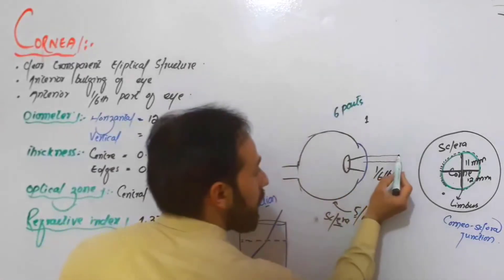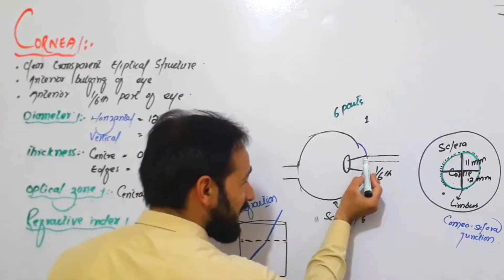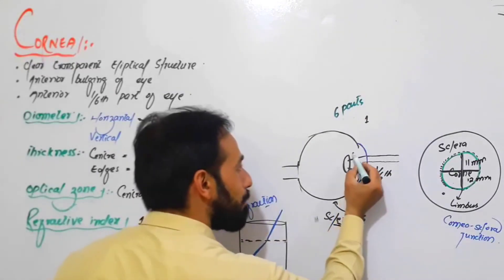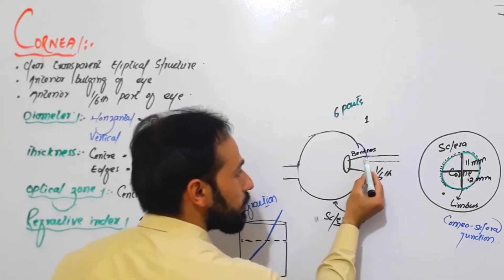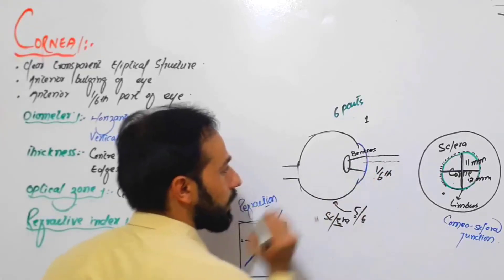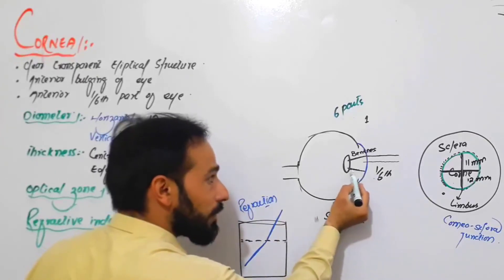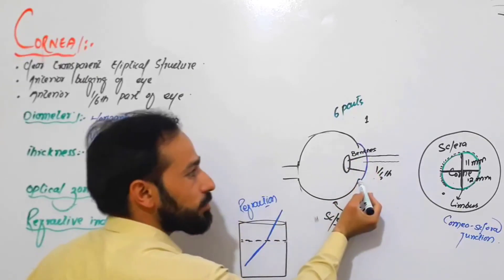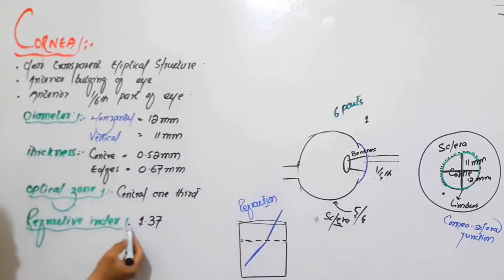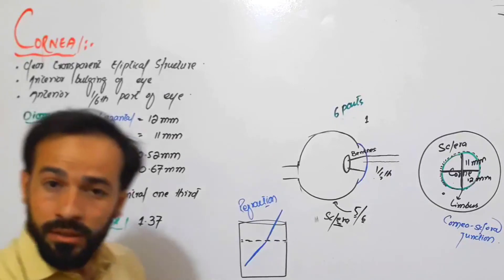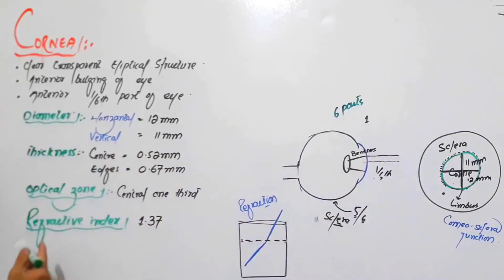The cornea bends the light to focus it toward the lens. When a light ray comes straight and touches the cornea, it shows a little bit of bending — this is refraction. The cornea is responsible for refracting the light, and its refractive index is 1.37.